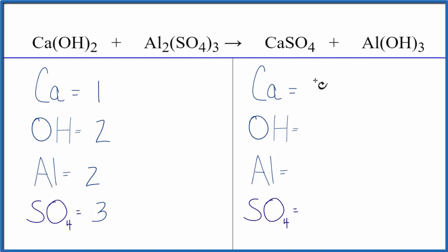On the product side, we have one calcium, three hydroxides, one aluminum, and then one sulfate.